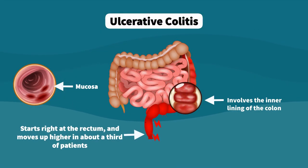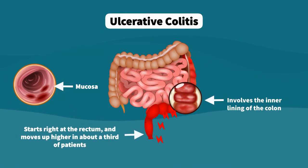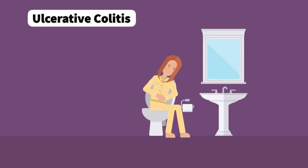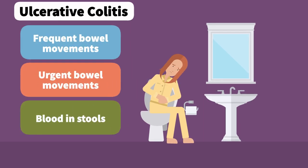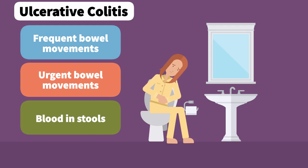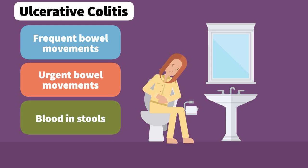Ulcerative colitis affects the inner lining of the colon, starting at the rectum and moving upward in about a third of patients. Patients with ulcerative colitis have symptoms attributed to inflammation of the rectum, including frequent bowel movements, urgency, and the potential passing of blood into stools. Abdominal pain is less common in ulcerative colitis, but patients may describe cramping before bowel movements.